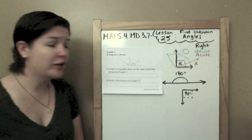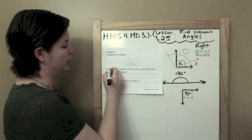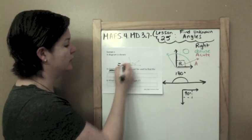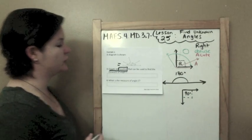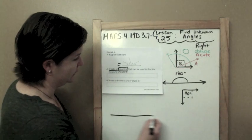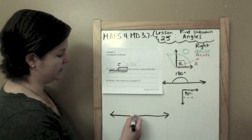A diagram is shown. Here's our diagram. Create an equation, means we need an equal sign, that can be used to find the measure of angle C. And part B says, what is the measure of angle C? So let me kind of redo down here what it looks like. That way you guys can see a little bit better.